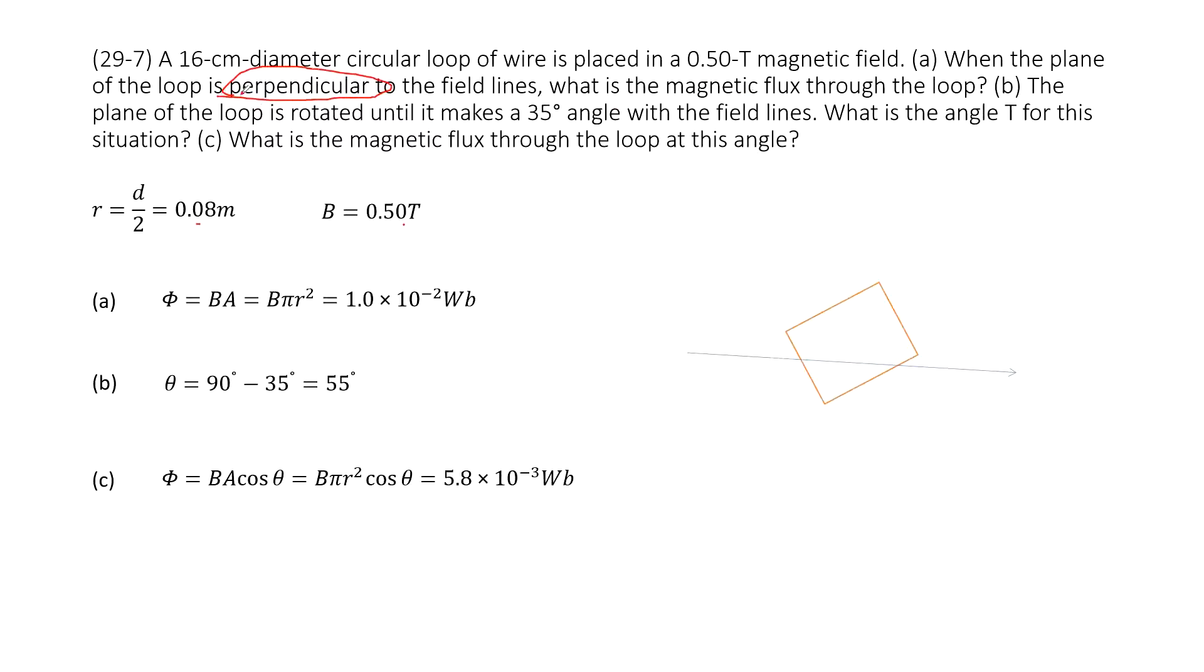So this is easy, right? Because perpendicularly, we can just write down the magnetic flux as B times A. So B times πr², input the given quantity, you get the answer there.